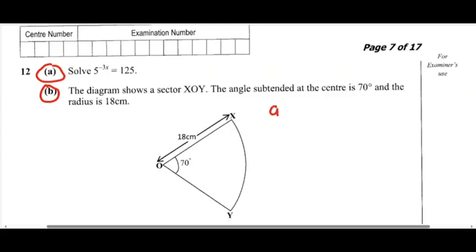For question A, they have asked you to solve 5 raised to the power of negative 3x, which is equal to 125. In order to solve this question, here the base is 5, here you have 125. You have to make sure that you write this 125 in index form, where the base is also going to be 5. So you are going to say 5 raised to the power of negative 3x is equal to 5 raised to the power of 3.